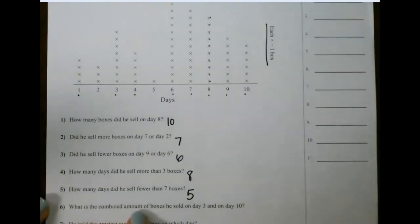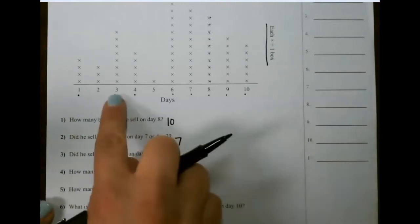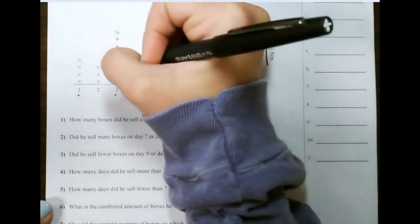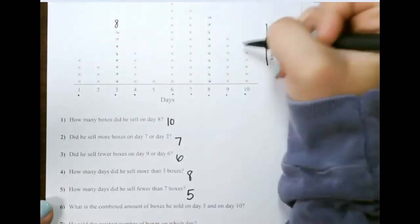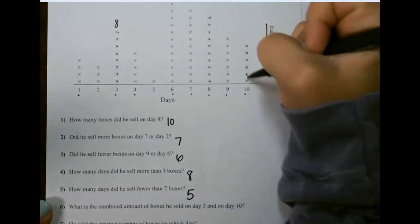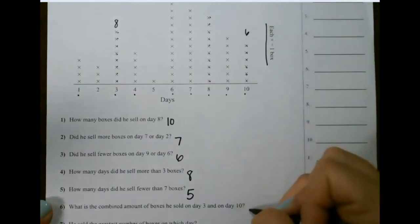This one says what is the combined amount of boxes he sold on day 3 and day 10. So if we look at 3, we have 8. So we add those two numbers together.